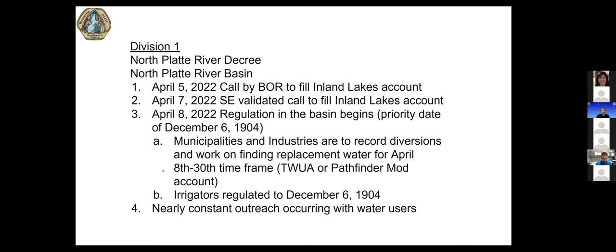Those entities are looking to either a temporary water use agreement (TWUA) or they look to Pathfinder Modification. Not that long ago, we added some height to the top of Pathfinder Dam to get storage back from what was lost to sedimentation, creating an account of 20,000 acre feet that can be used for municipalities in times of shortage. Some of those industries and municipalities are able to buy some of that water from the Bureau to make up for their uses during the April 8th to 30th timeframe. Irrigators in the basin are also regulated to that 1904 priority date. Michelle Jess is our North Platte coordinator and is nearly in constant contact with industries and municipalities as they figure this out.